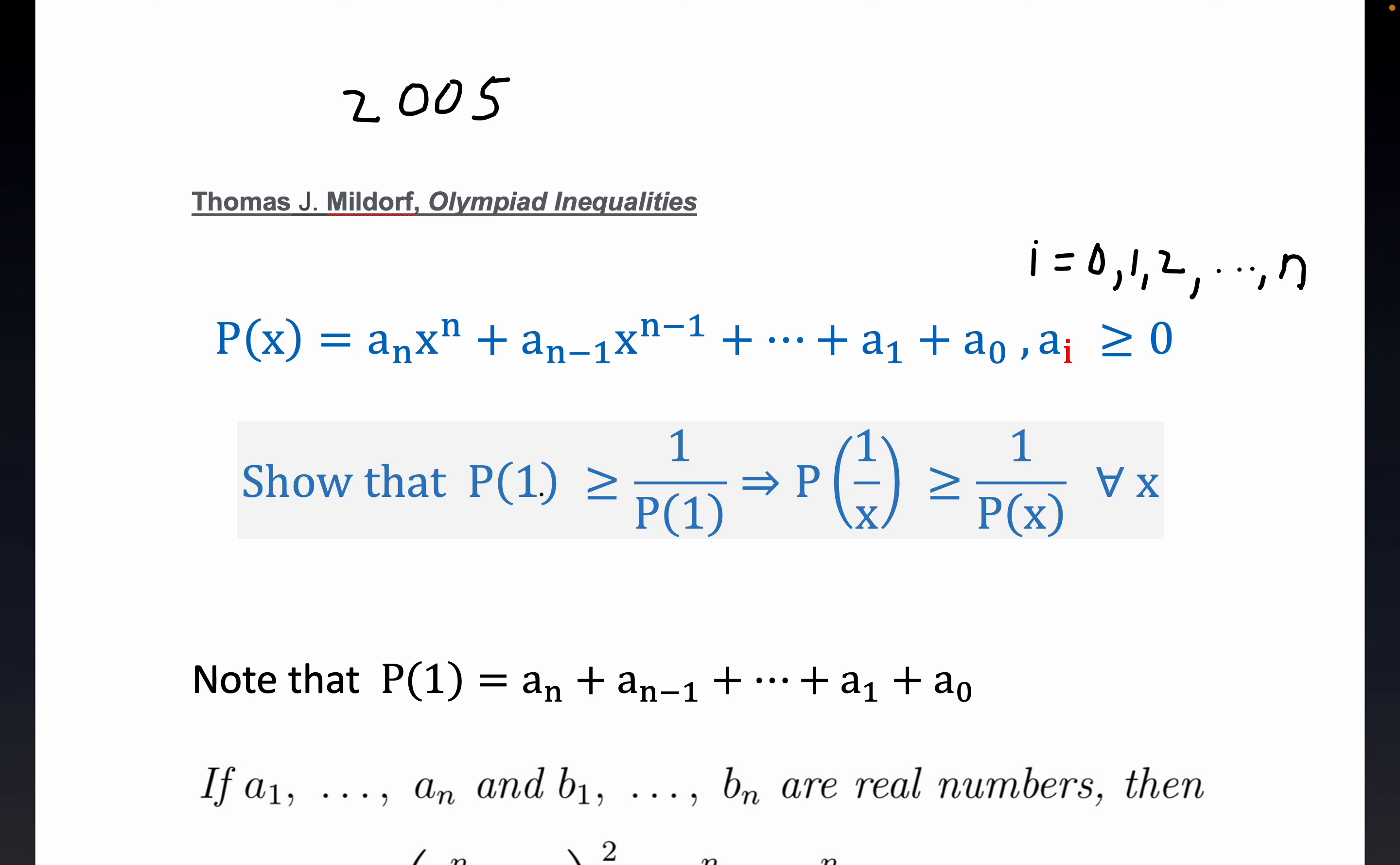This statement right here, P of 1 is greater than or equal to 1 over P of 1, that intimates certainly that P evaluated at 1 squared. If you multiply through by P of 1 you get this statement. And P of 1 squared greater than 1 certainly implies that P of 1 is greater than or equal to 1.